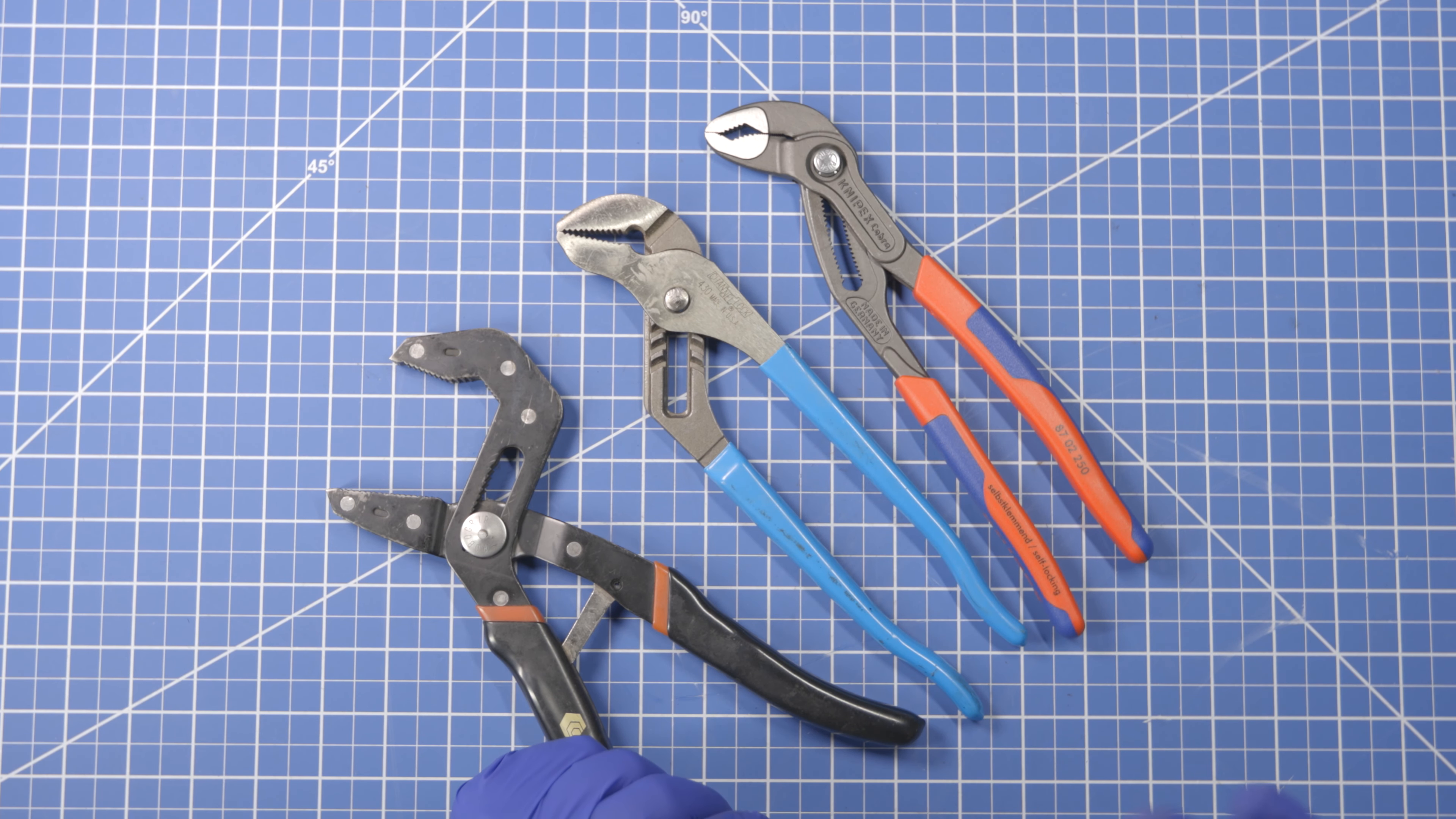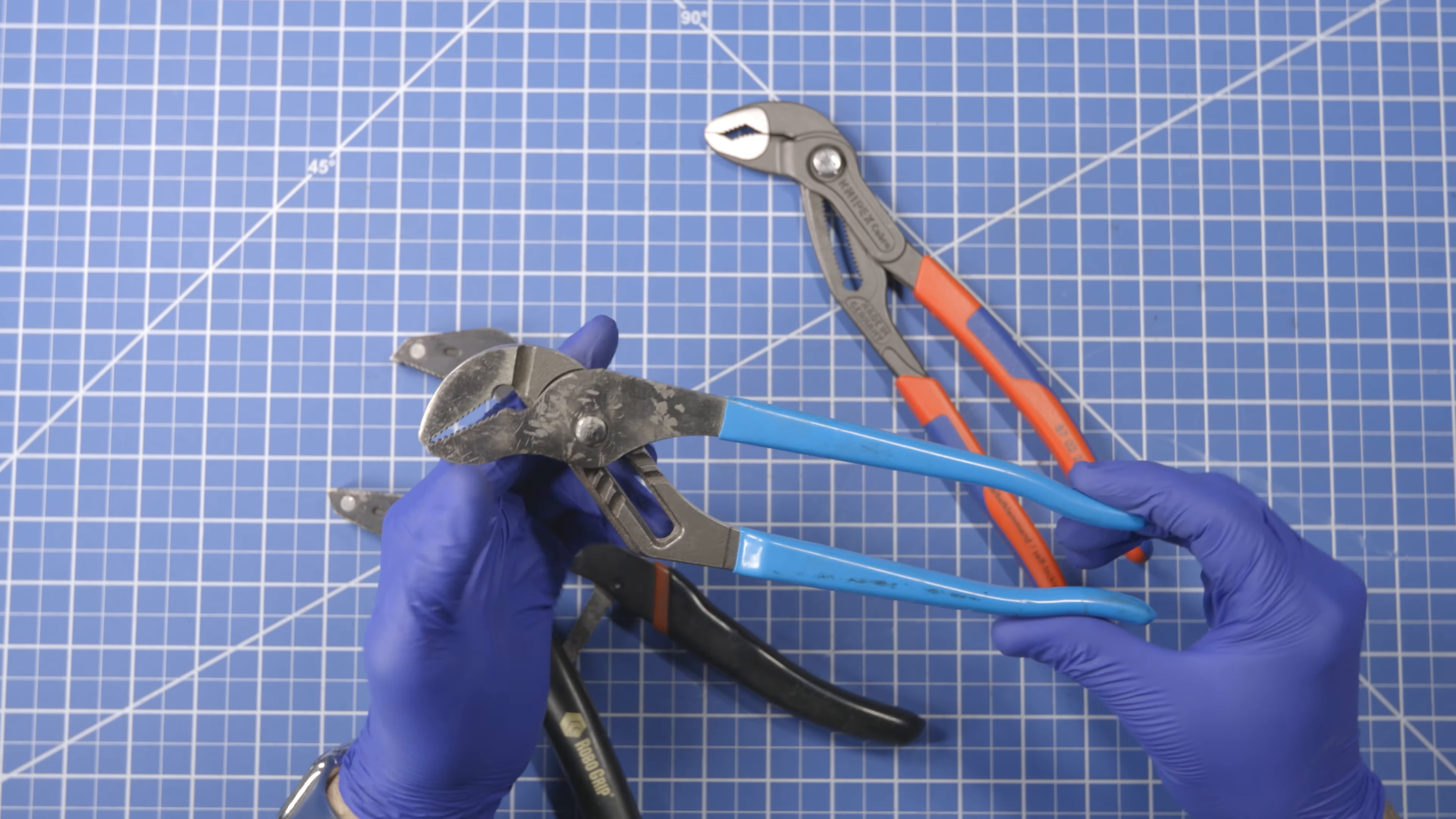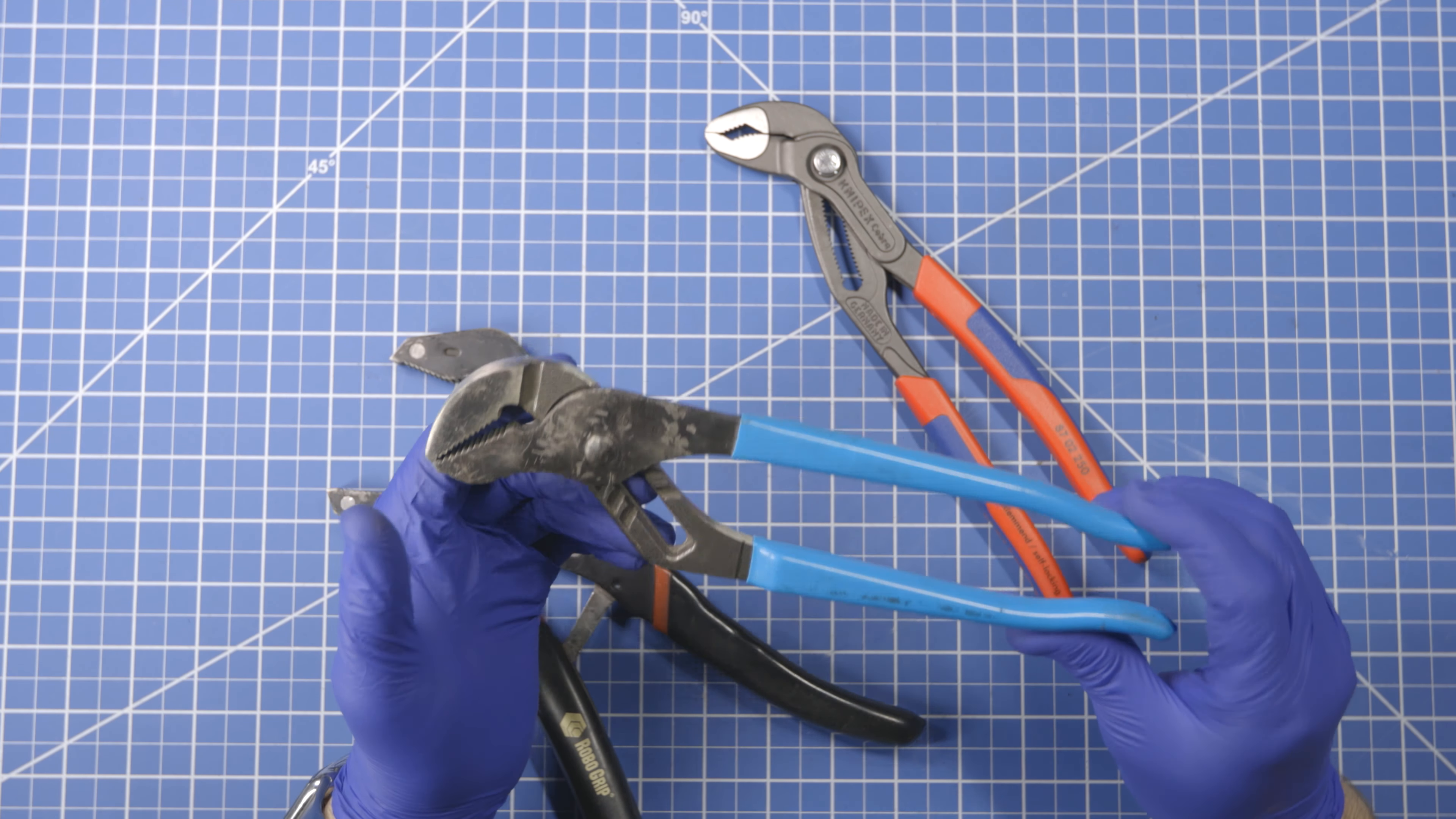So channel locks are kind of ubiquitous, you know what people think of when they're talking about adjustable jaw pliers. The way they work is there is a rivet that is the pivot point of course.